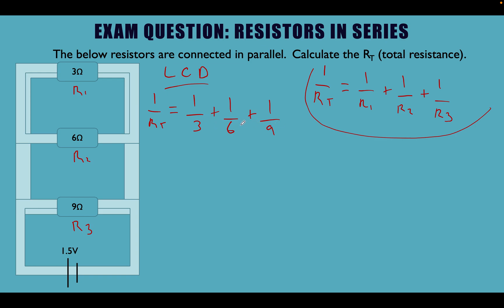We're using the lowest common denominator for these. The denominator is the number below the divisor line, so 3, 6, and 9 are our denominators. The lowest common denominator is the lowest number that all three will divide into. The easiest way is to multiply the largest by 2: 9 times 2 is 18. Does 6 go into 18? Yes. Does 3 go into 18? Yes.